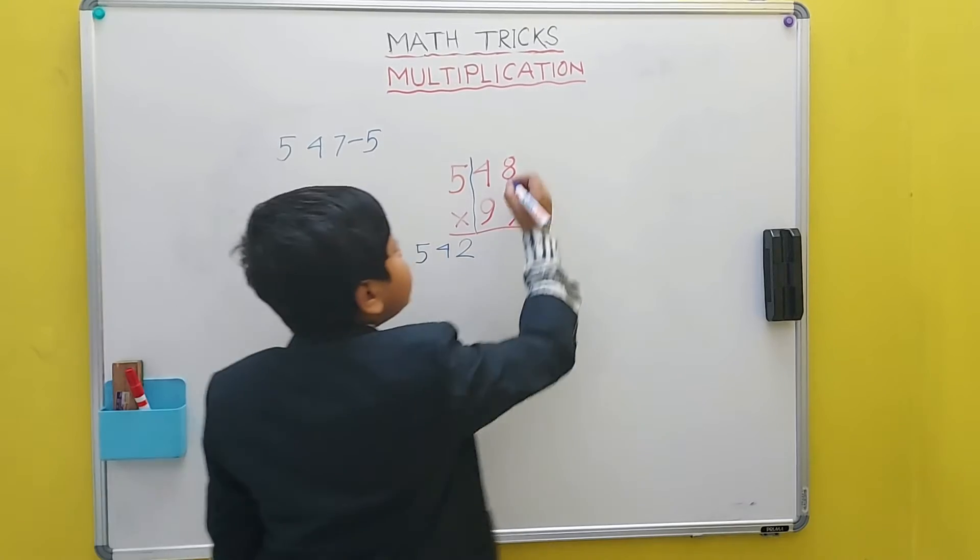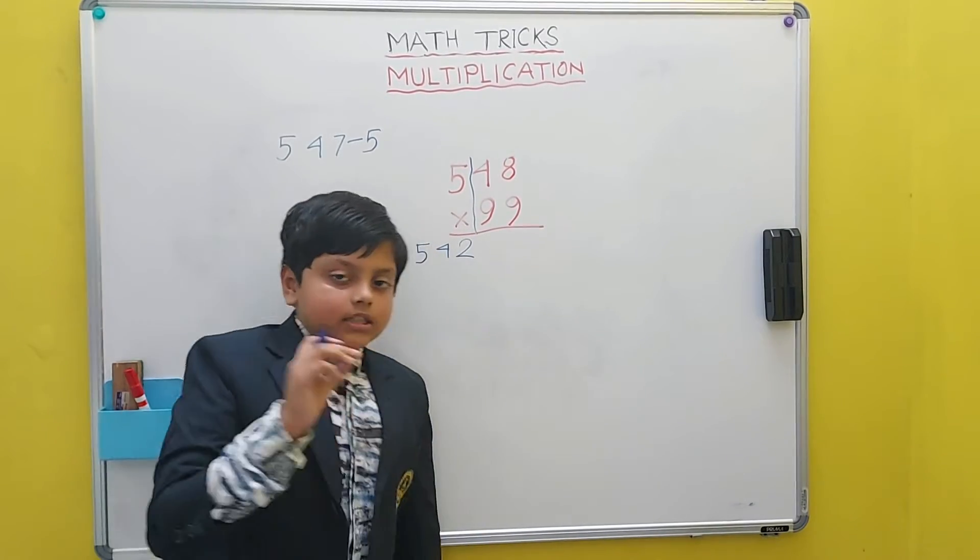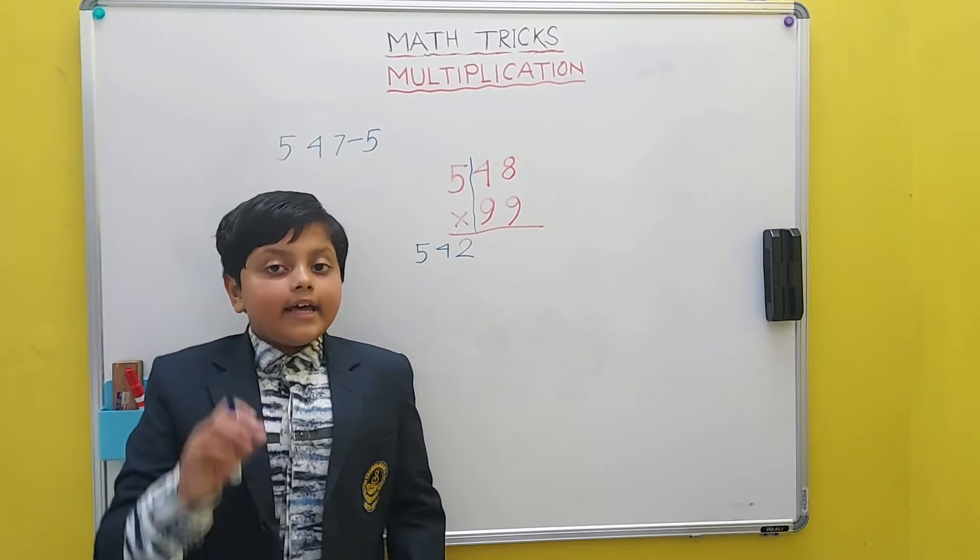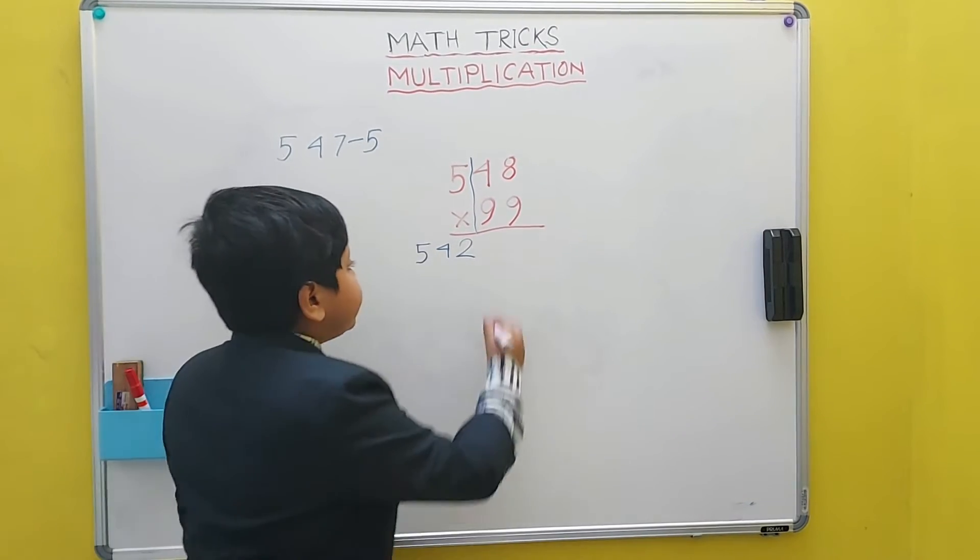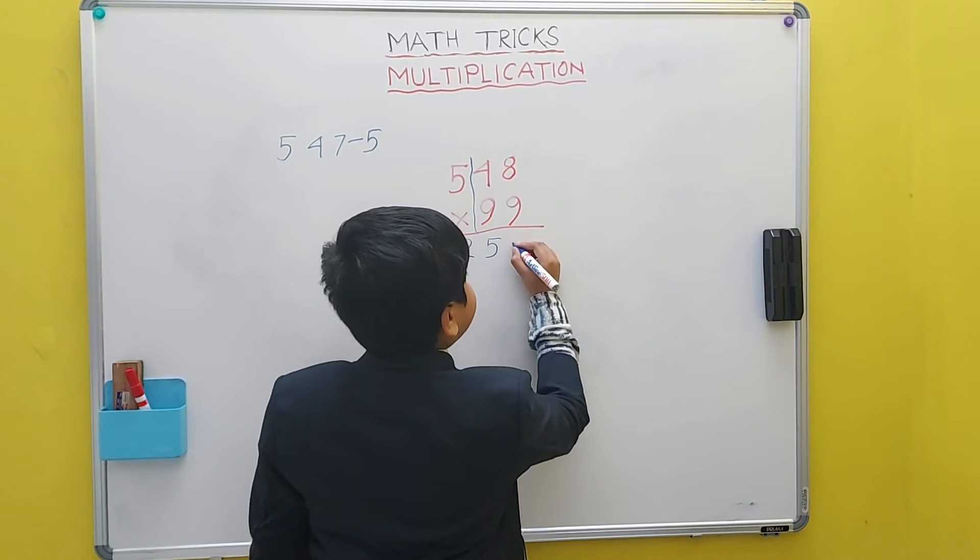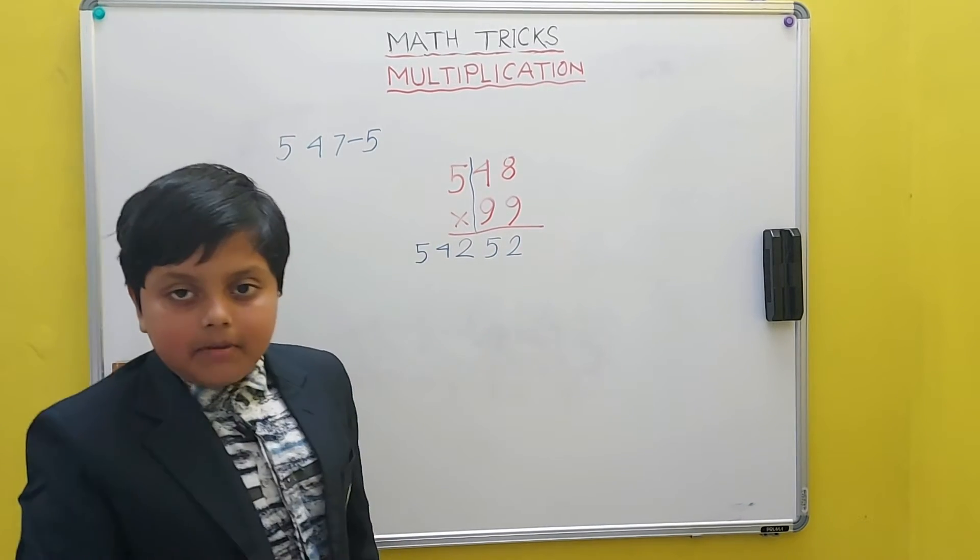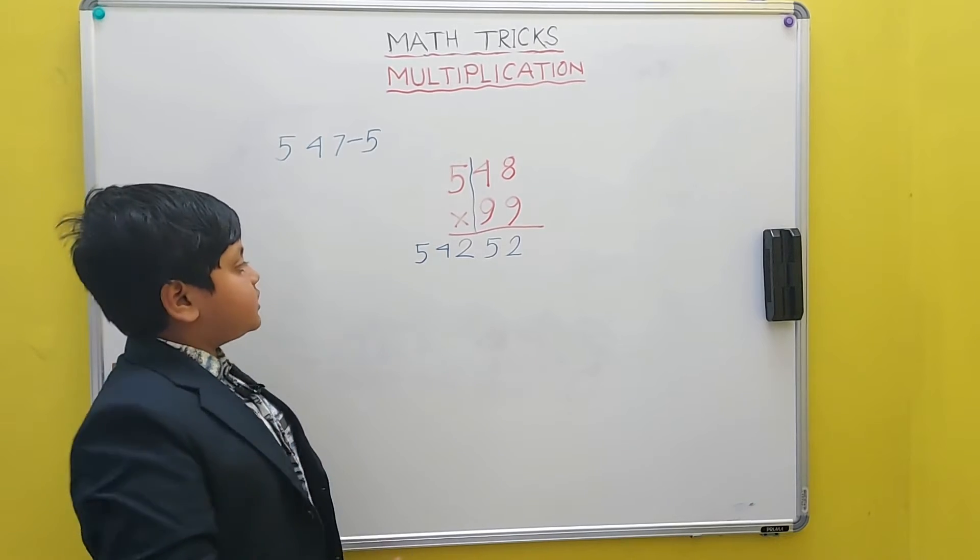Now, we have to use all from 9, last from 10 subtraction method. In my previous video, I have already said that. So, it will be 52 next to this number. Then, this is the answer.